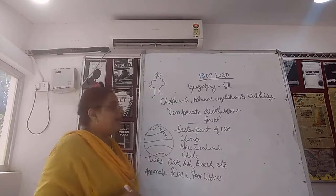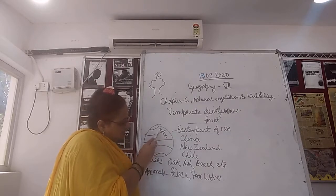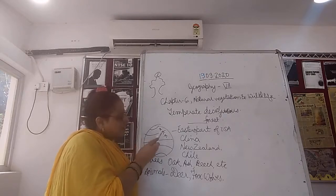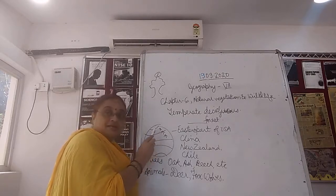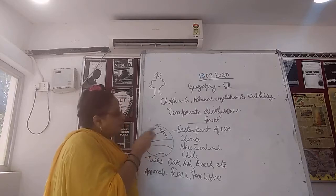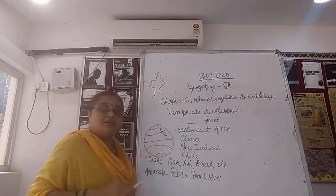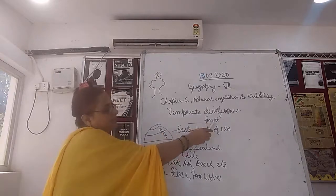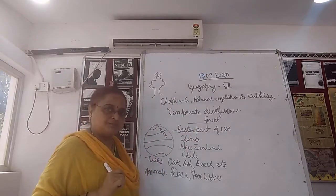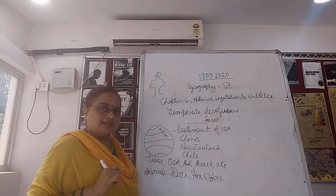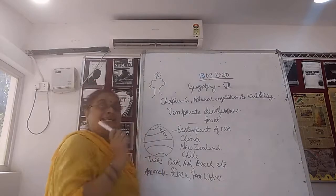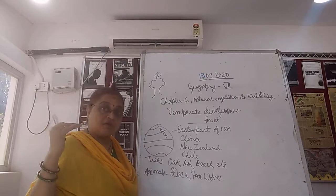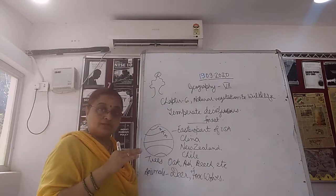India lies in the tropical region — near the Tropic of Cancer. So India does not have a temperate kind of climate, and therefore temperate vegetation or temperate forests are not found here. India is in the tropical region, as the Tropic of Cancer passes through it.